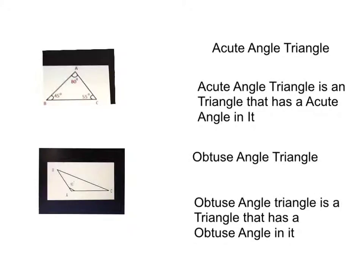Acute angle triangle: acute angle triangle is a triangle that has an acute angle in it. All of the angles are acute.